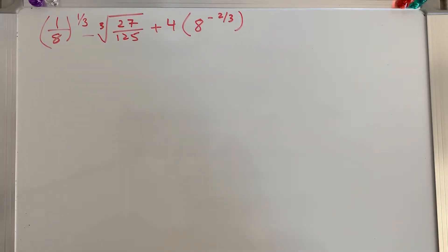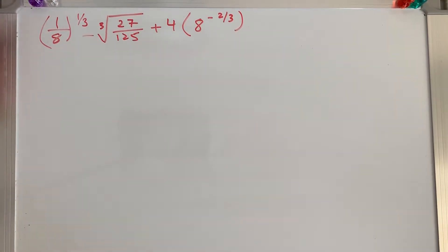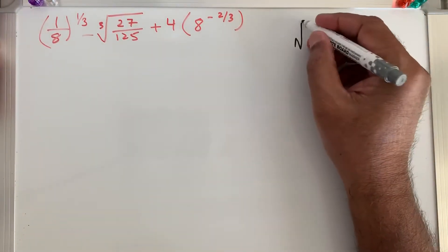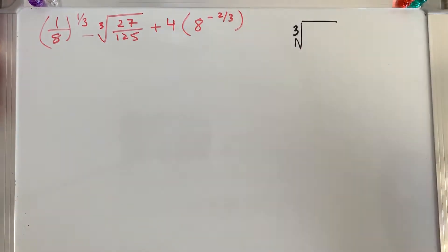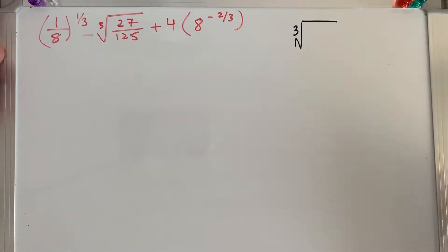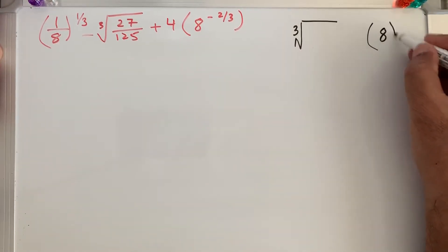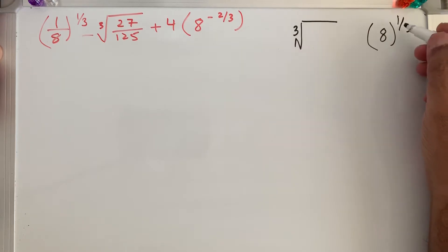Welcome to my channel 'Learn Math with Sayyad Ali.' Today we will be learning cube root. Cube root is represented with a radical sign with a 3, and in exponent notation, 8 to the power 1 over 3 means we have to take the cube root of 8.